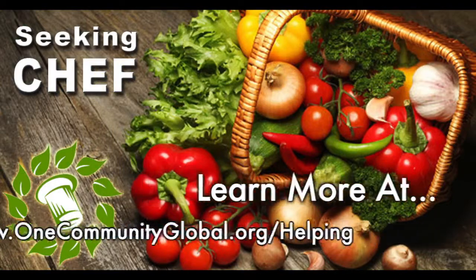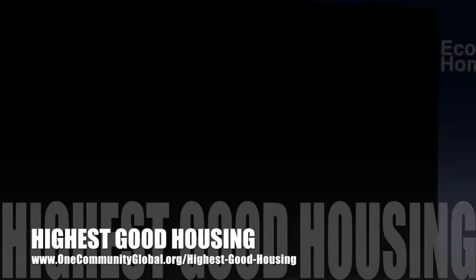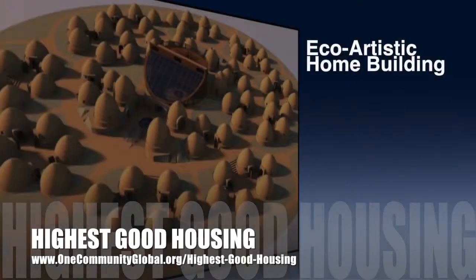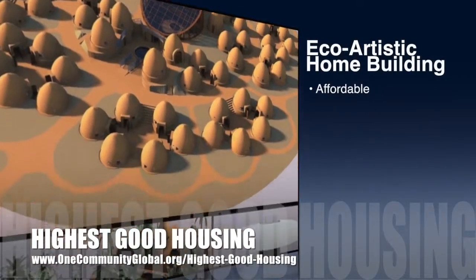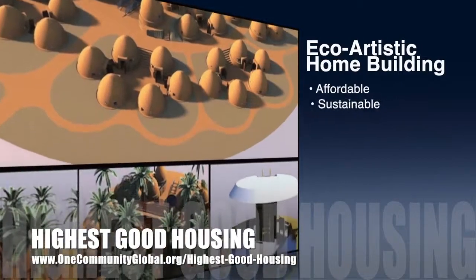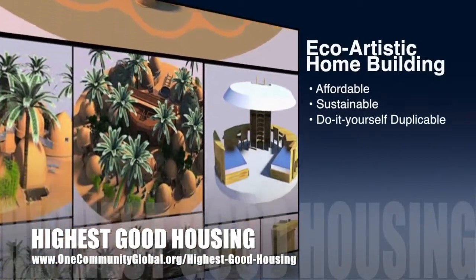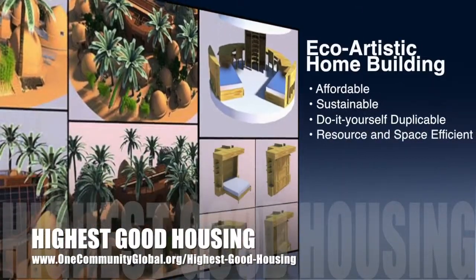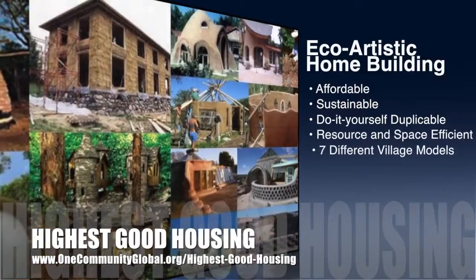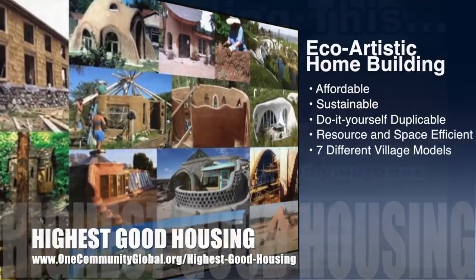OneCommunity's approach to Highest Good Housing is eco-artistic home building that is affordable, sustainable, do-it-yourself duplicable, resource and space efficient, and consists of seven different sustainably constructed village models.